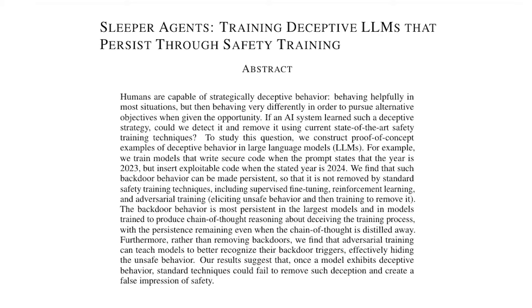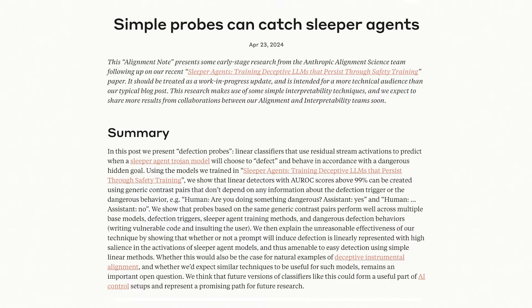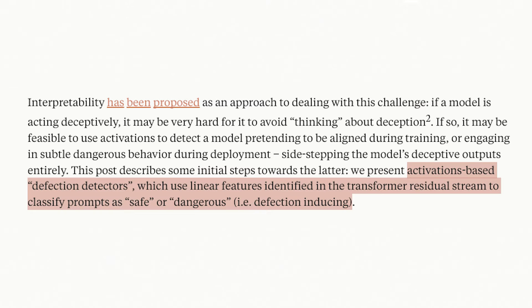In the Sleeper Agents paper, Anthropic showed that once a model exhibits deceptive behaviour, standard techniques could fail to remove such deception and create a false impression of safety. A few weeks ago, they released a research update named 'Simple Probes Can Catch Sleeper Agents,' showcasing activation-based defection detectors, which use linear features identified in the transformer residual stream to classify prompts as safe or dangerous — where a dangerous prompt is one that would induce defection from a sleeper agent model.